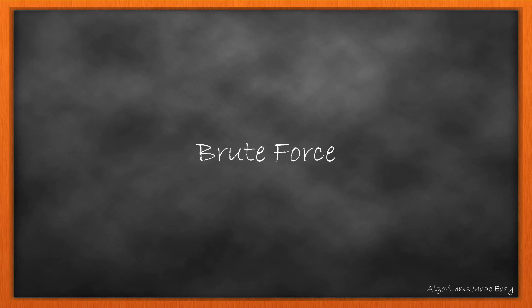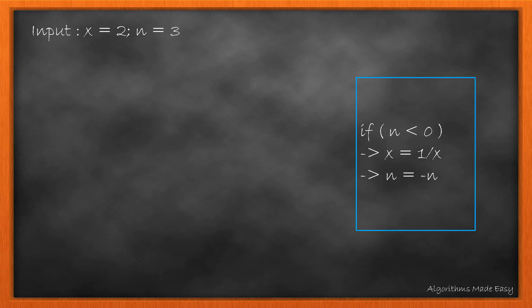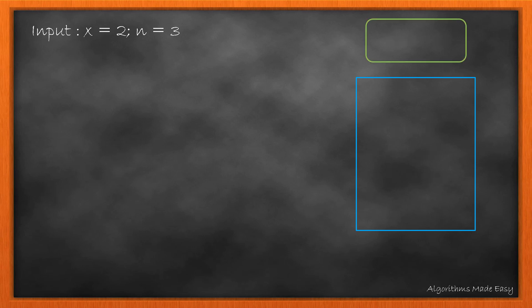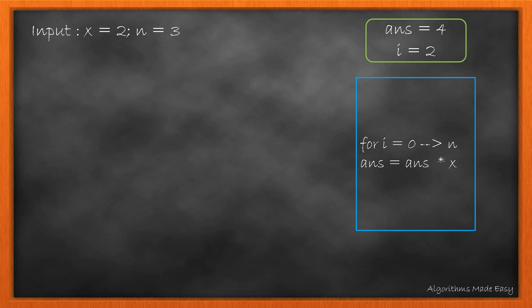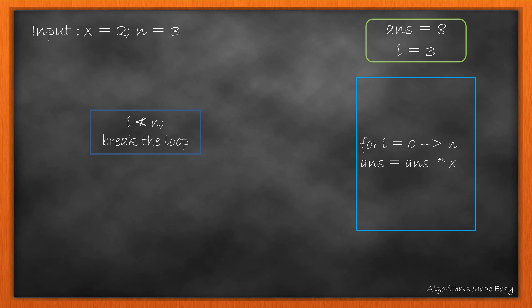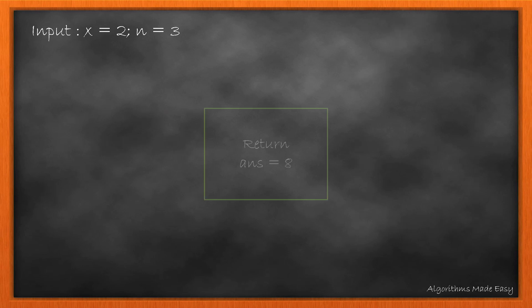Let's start with the brute force method. We first convert our power to positive if it is negative by updating x to 1 by x. We initialize an answer variable to 1 and start iteration from i equal to 0. In each iteration, we update the answer to answer multiplied by x, which comes out to be 2 in the first iteration. We update the answer and increment i. We again calculate answer which becomes 4. As i is still less than n, we calculate again and update. When i becomes equal to 3, it does not satisfy our condition, so the loop breaks and we return the answer.